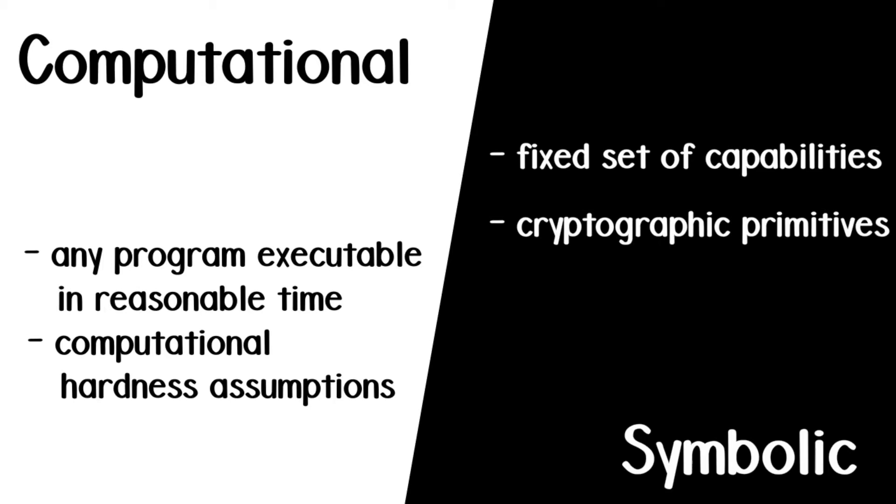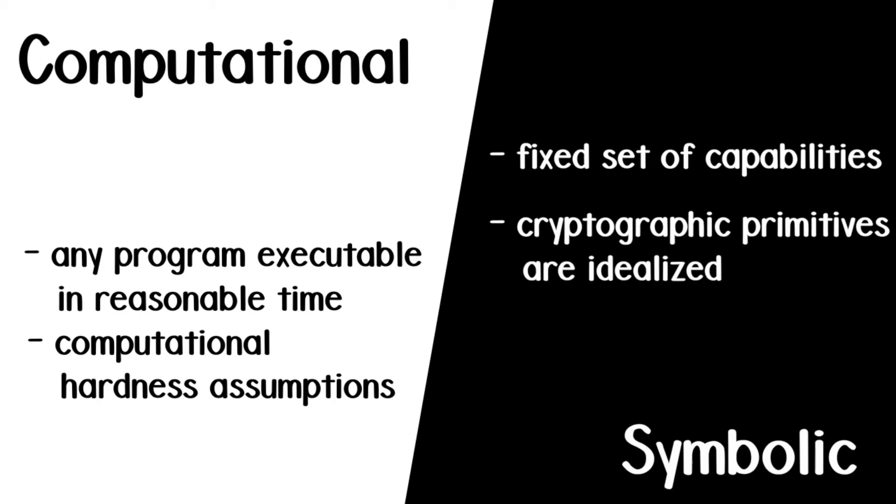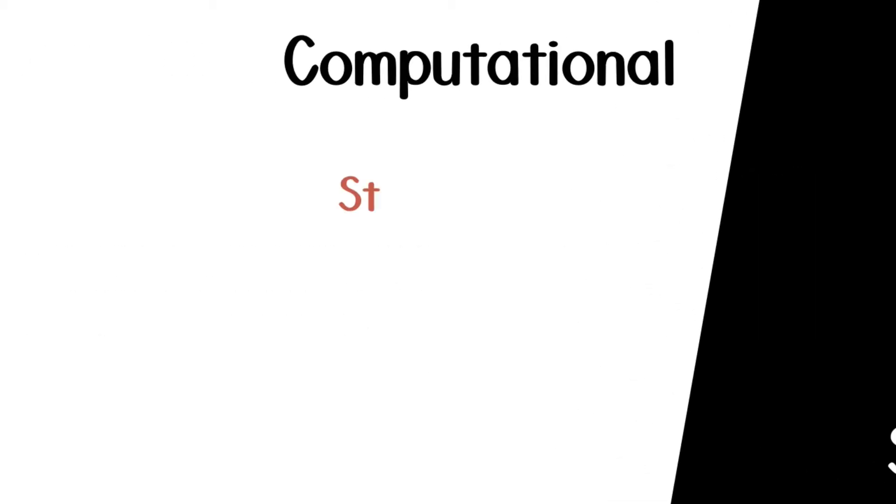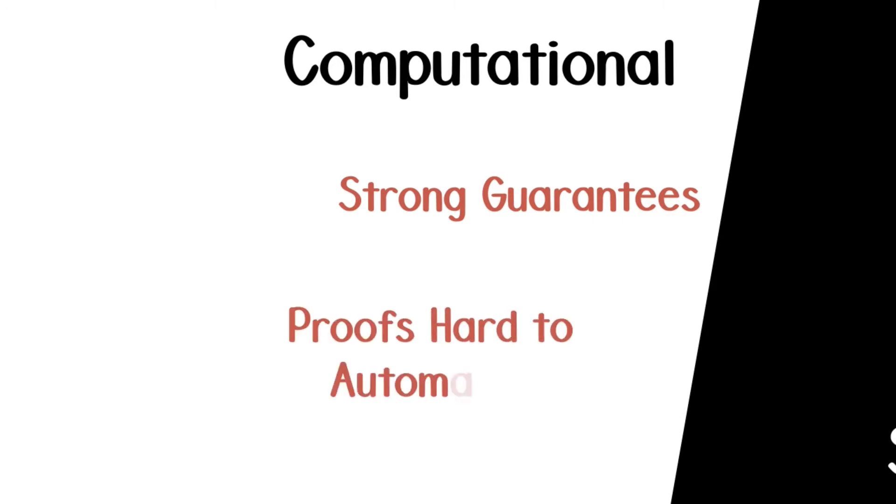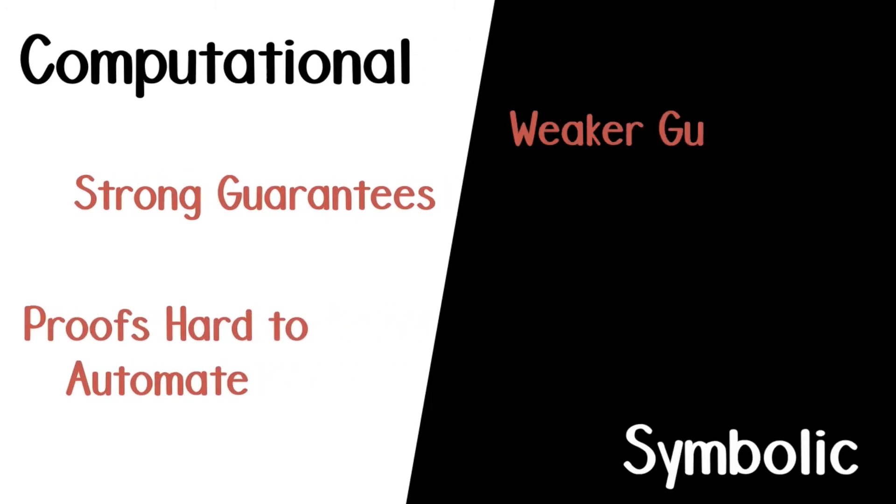And the primitives are essentially assumed secure. On one side, we get strong guarantees with few automation, while on the other, we get weaker guarantees with a lot of automation. Both approaches are interesting, and it is very unlikely, for instance, that we will ever reach, in the computational model, the level of automation of the symbolic one.